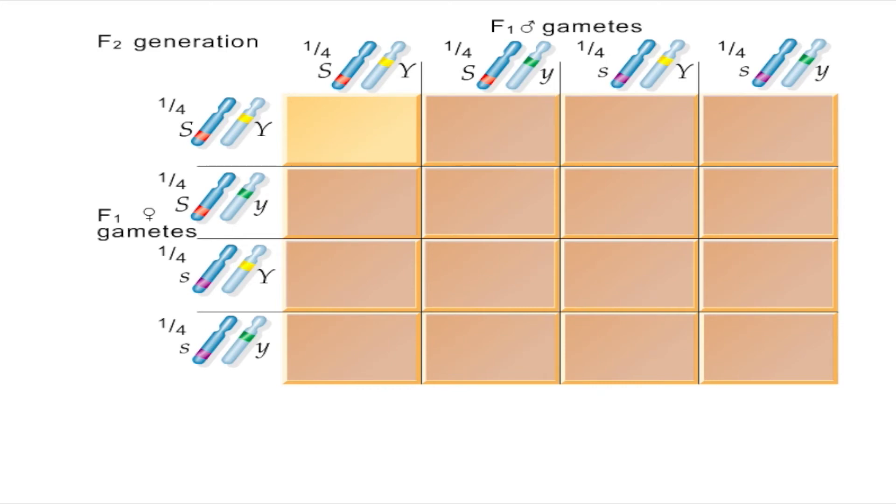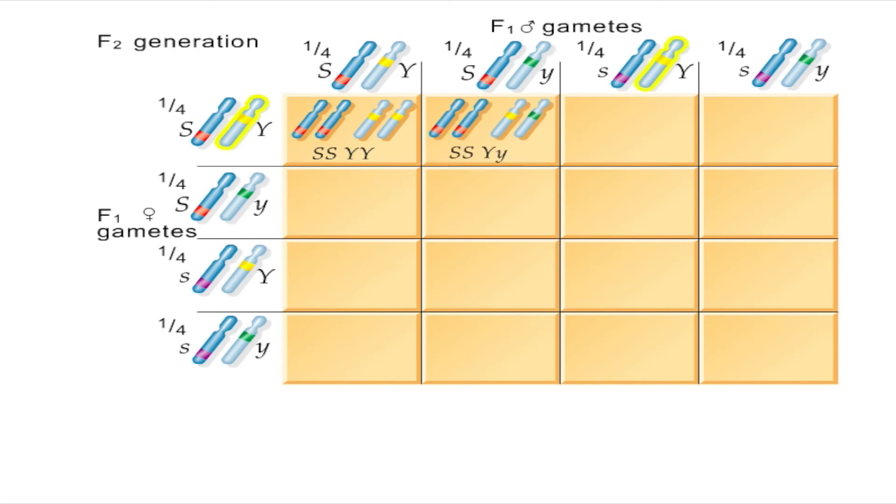For example, the top left corner of the square would receive the S and Y alleles from both parents, and thus be SS and YY. The rest of the square can be filled in similarly.